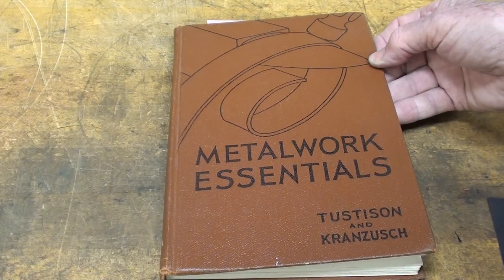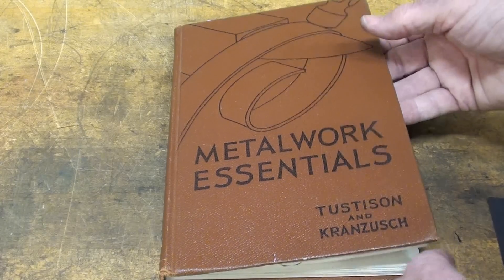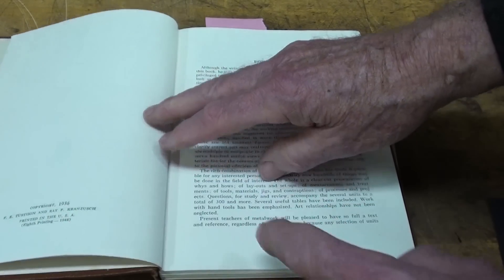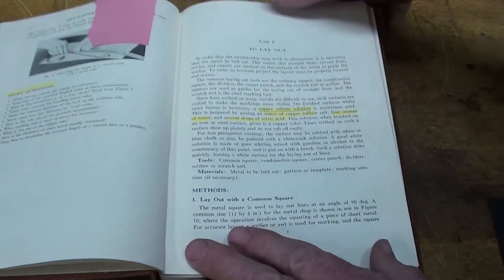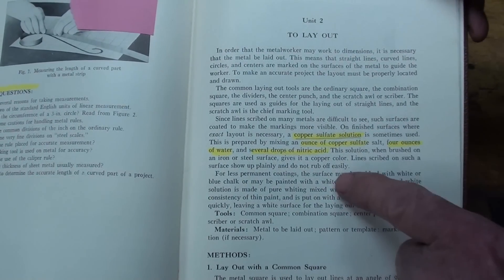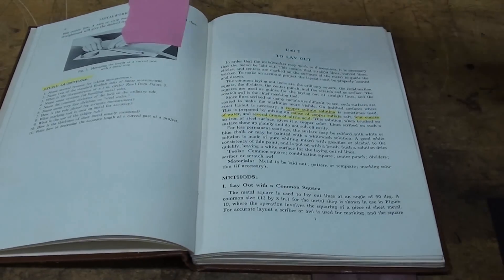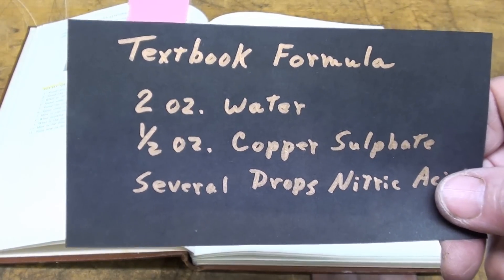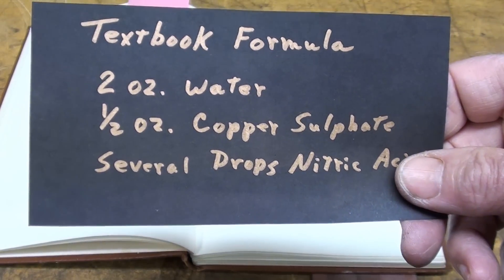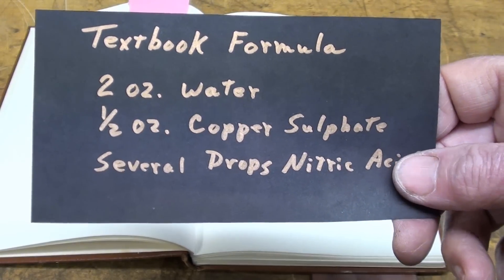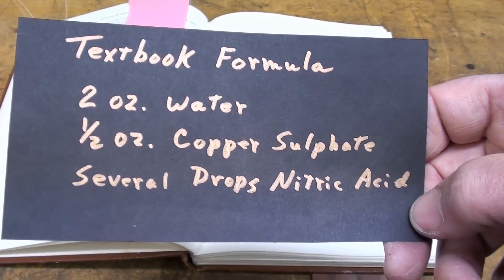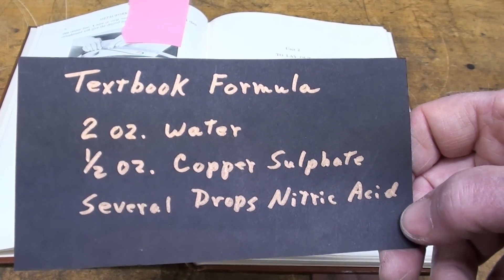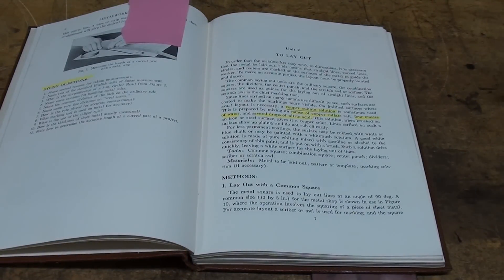Just about every old textbook will probably show this. This was my dad's book with a 1936 copyright, printed in '48. In the layout section they tell you how to make this preparation: take two ounces of water, half ounce of copper sulfate and several drops of nitric acid. Well that nitric acid is nasty stuff and I do not recommend using it, so I'm going to change the formula just a little bit and show you what they have in the Machinery's Handbook.